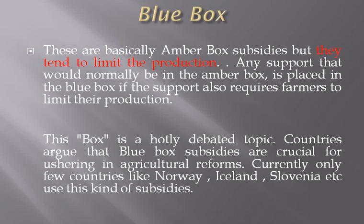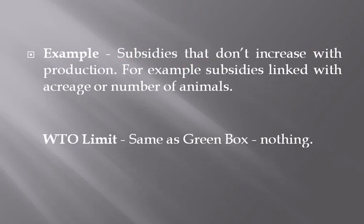Countries argue that blue box subsidies are crucial for managing agricultural reforms. Currently only a few countries like Norway, Iceland, and Slovenia use this kind of subsidies. Examples include subsidies that don't increase with production — for example, subsidies linked with acres or number of animals. The WTO has not given any limits for these subsidies, similar to green box.